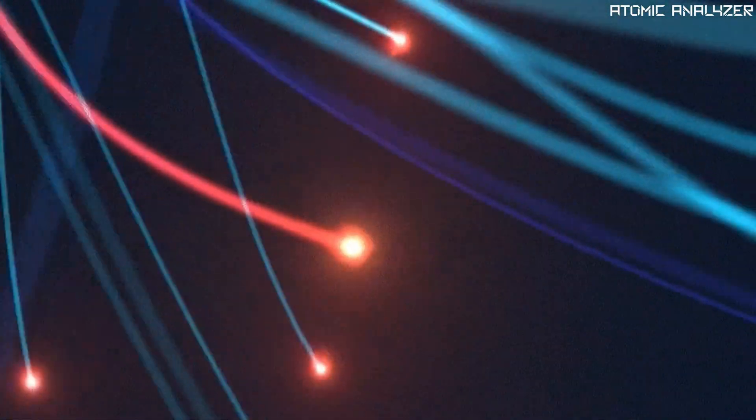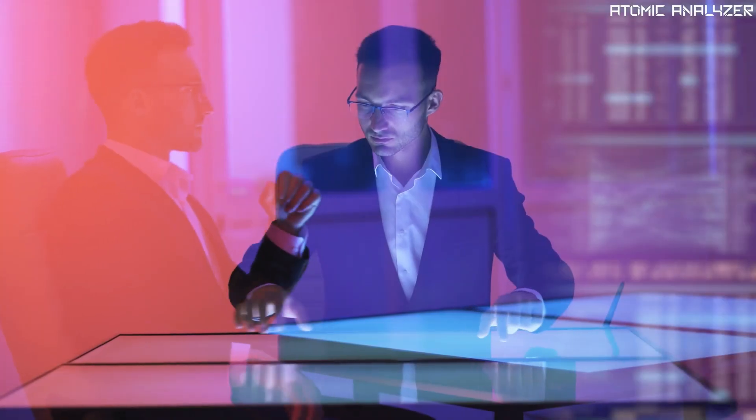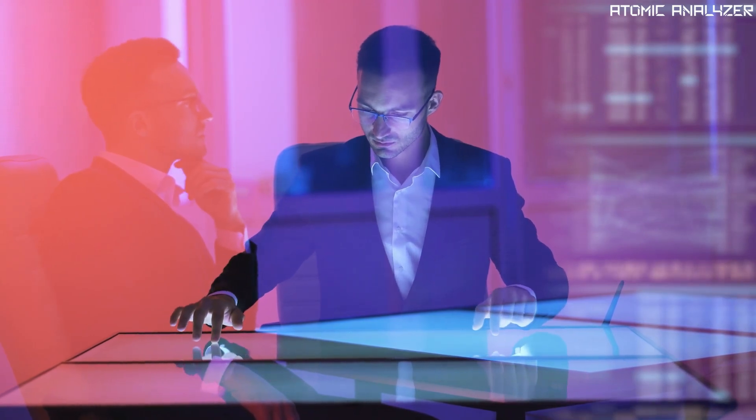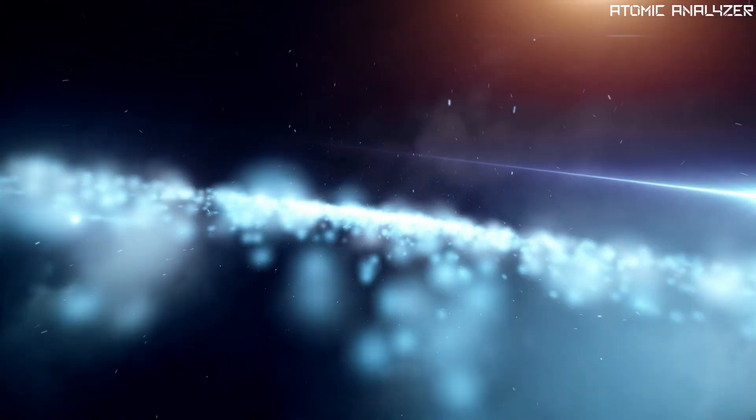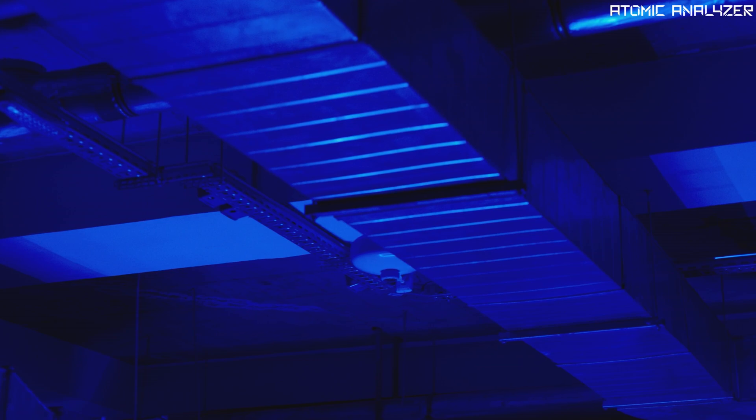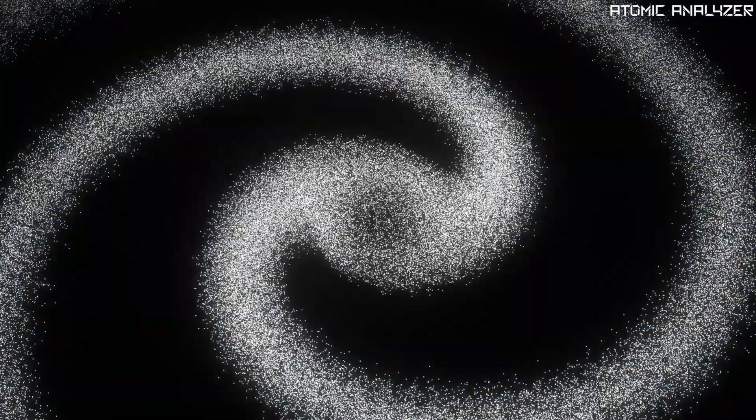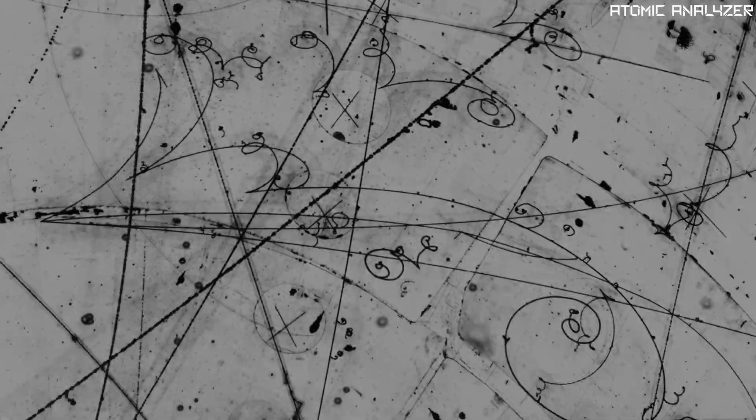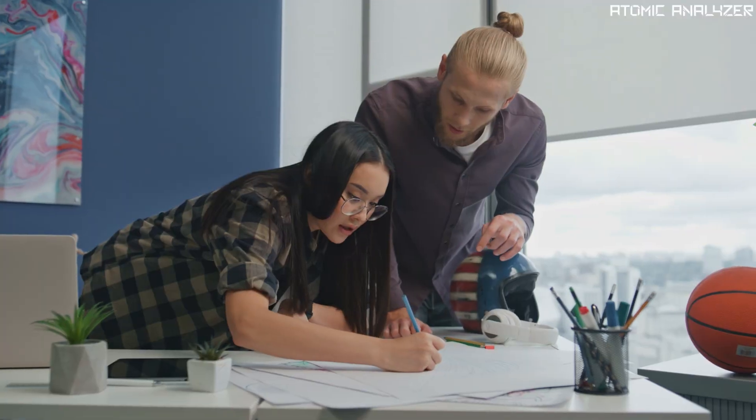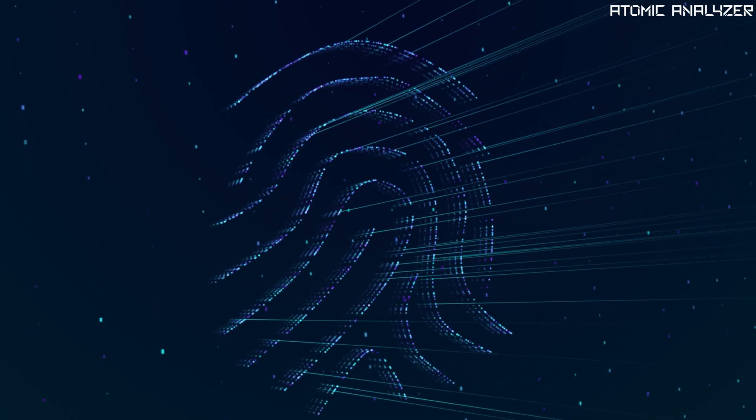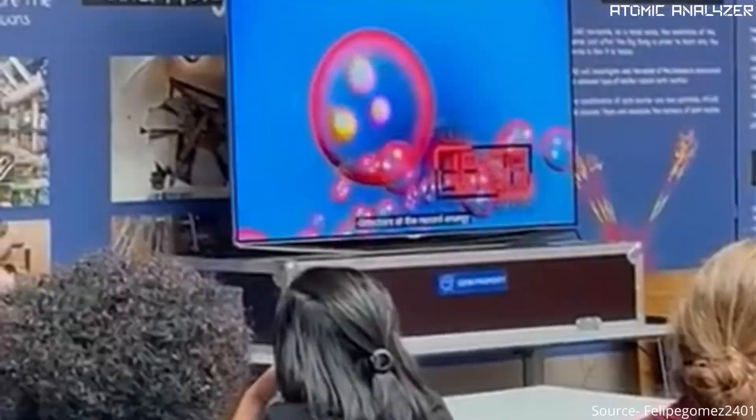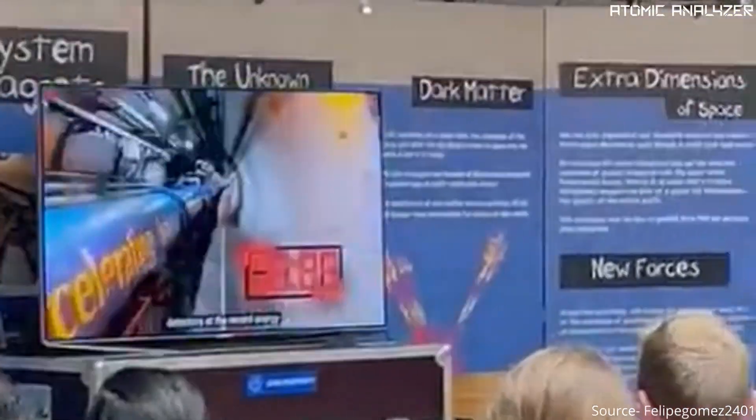But how do we catch these fleeting Higgs bosons? Scientists designed incredibly sensitive detectors that resemble something out of a sci-fi movie. These detectors track the debris left behind after particle collisions like cosmic breadcrumbs. By analyzing these traces, scientists can identify the Higgs boson's signature fingerprint, a groundbreaking feat achieved at CERN in 2012.